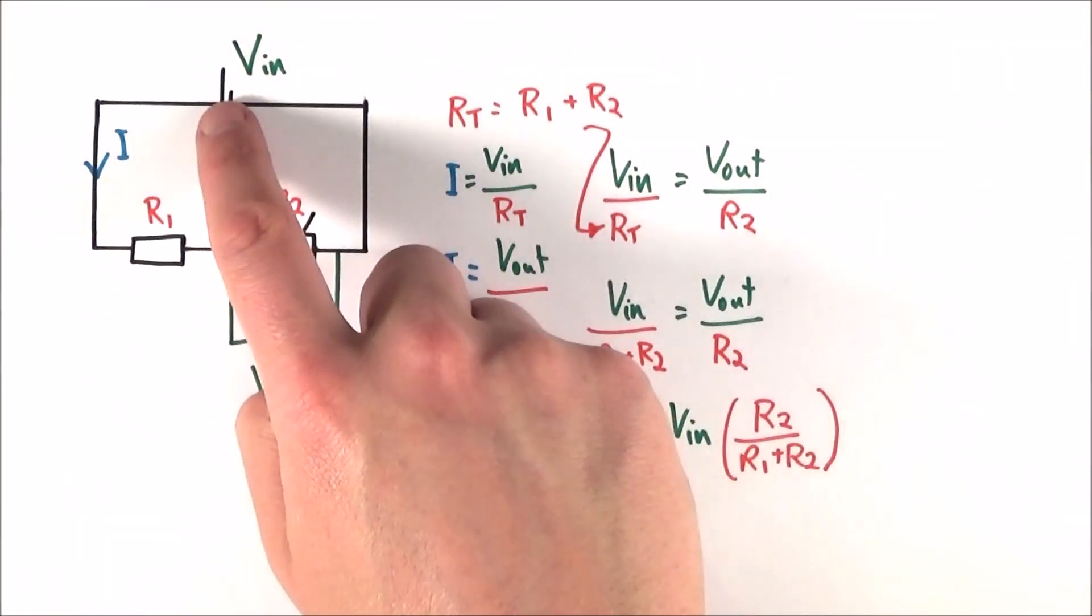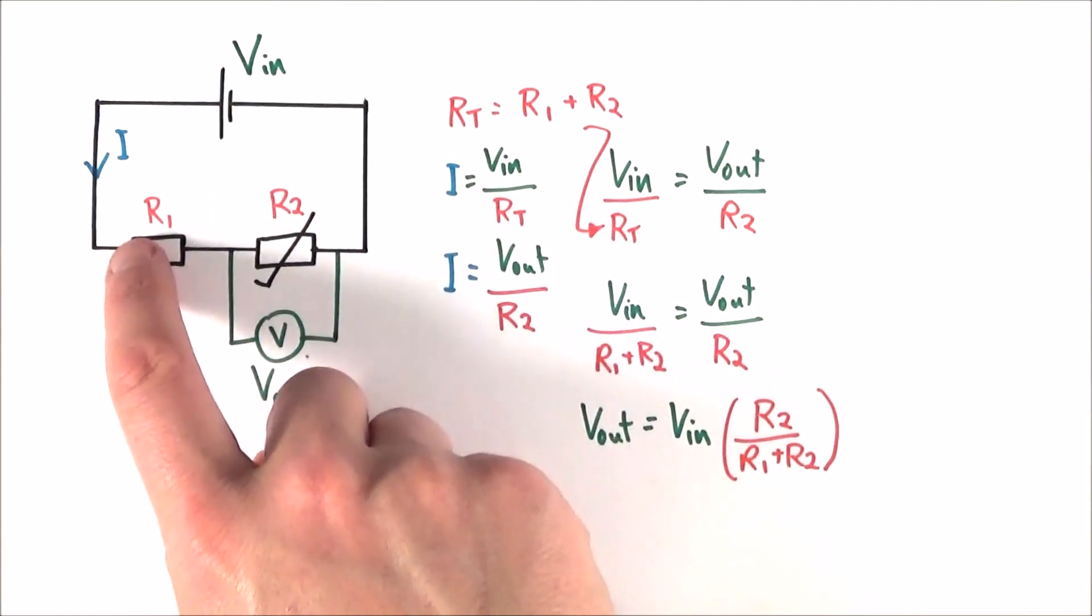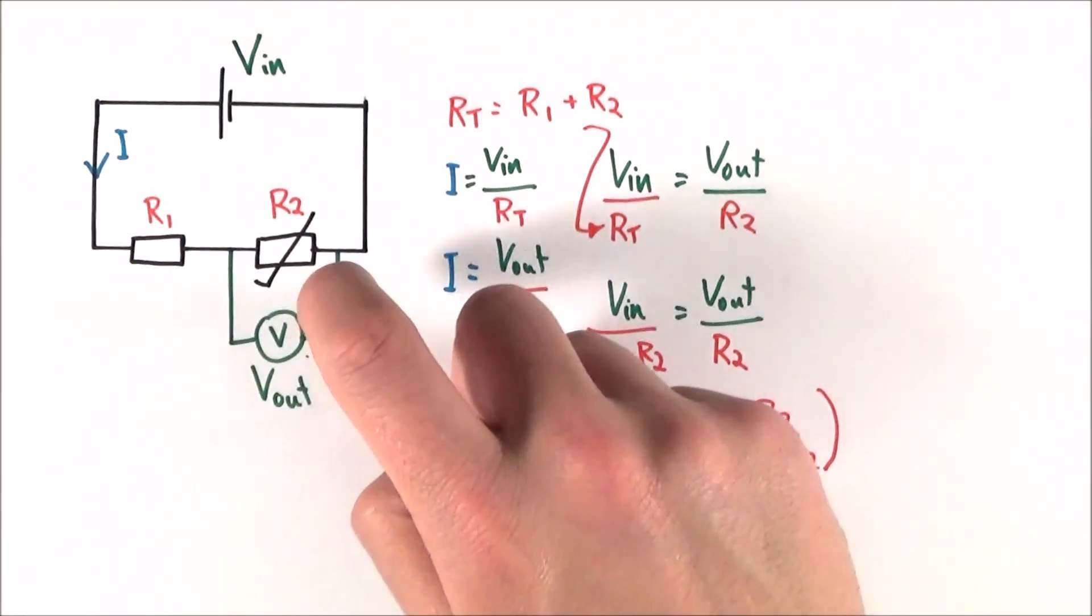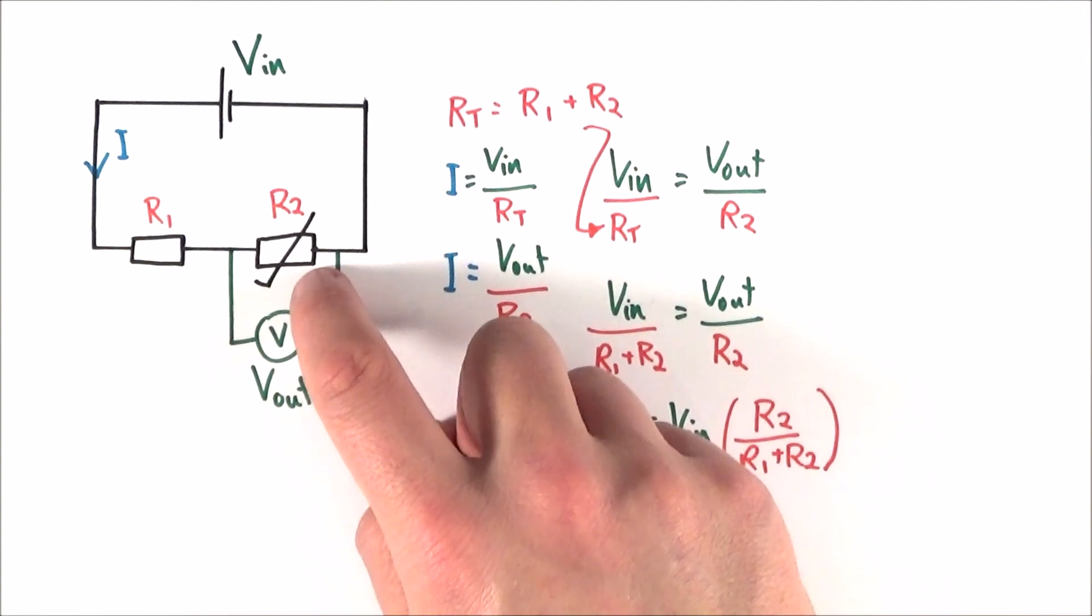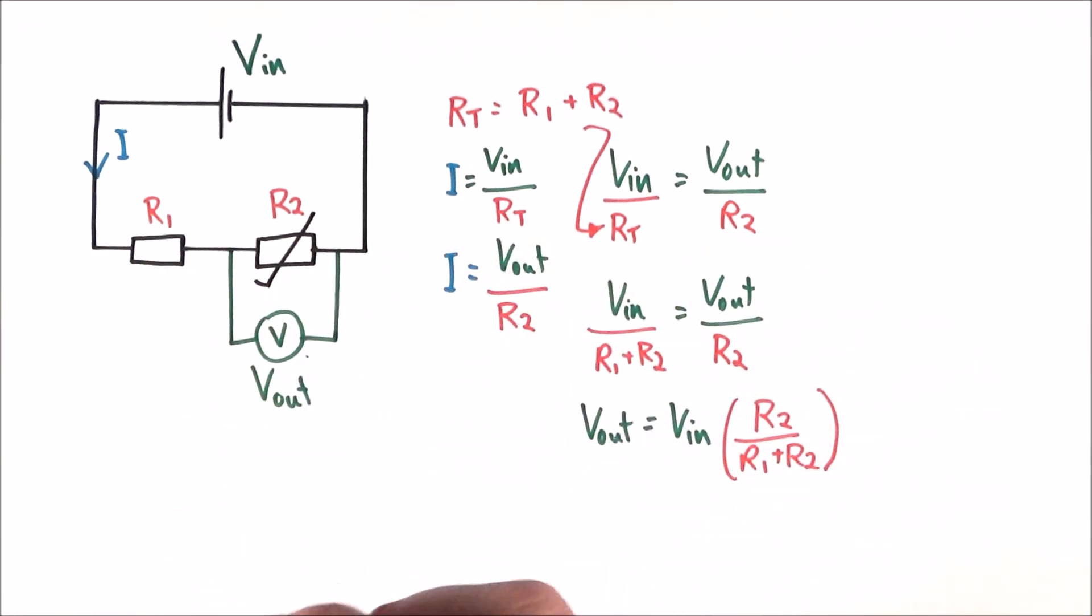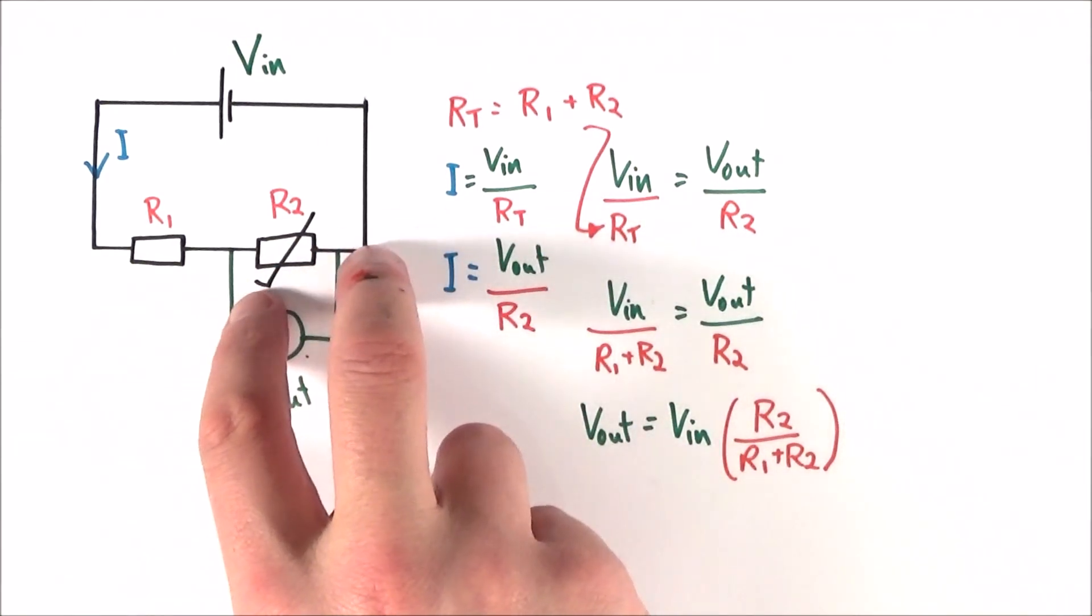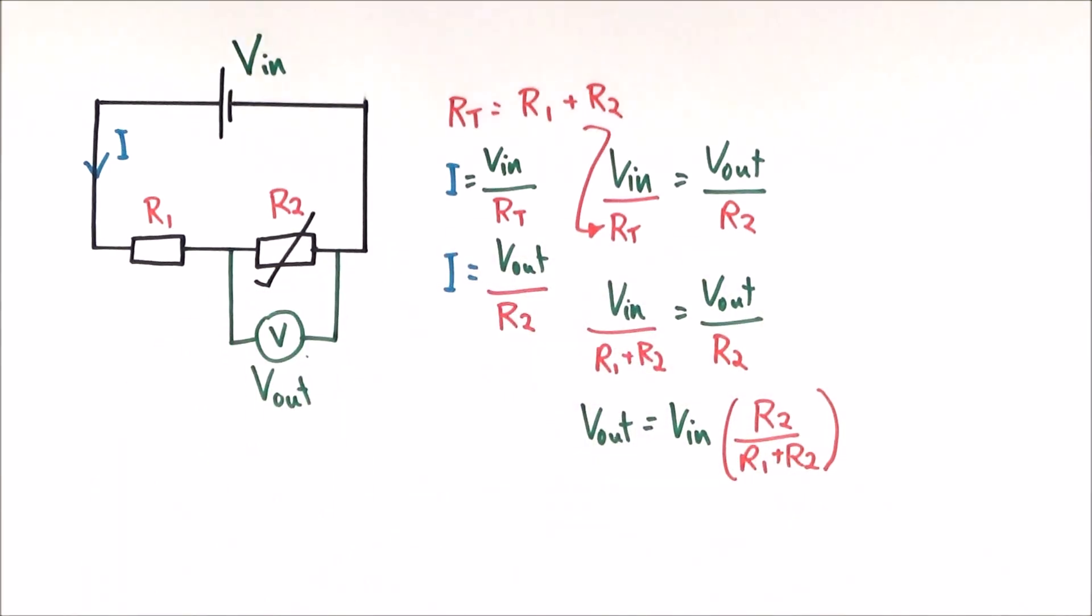All we're doing is we're dividing up this potential difference here in with maybe a couple of resistors. And what we find is if one of them is a sensor, perhaps a heat sensor or a light sensor, then this changes its share of that potential difference. And we can use this in many ways.